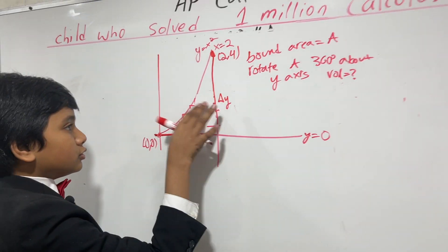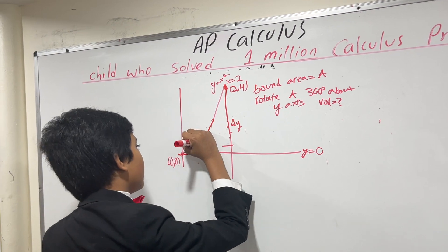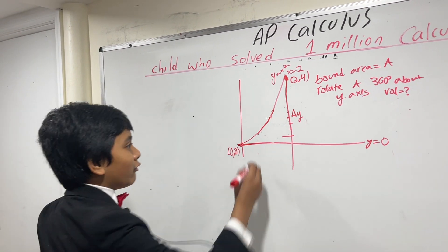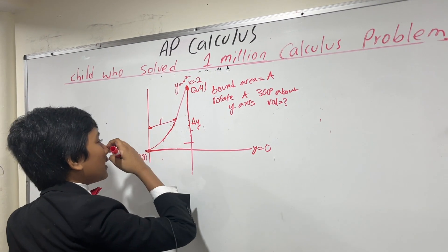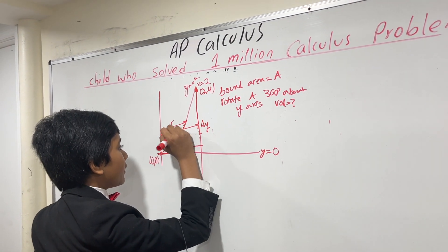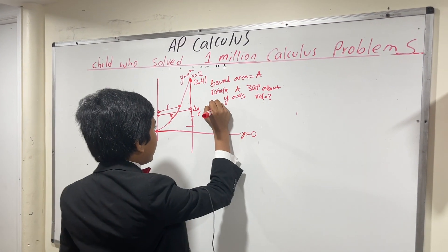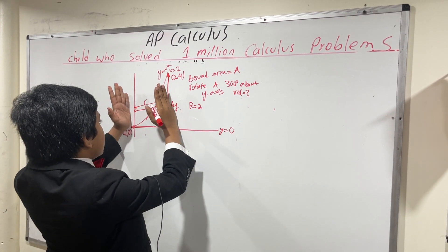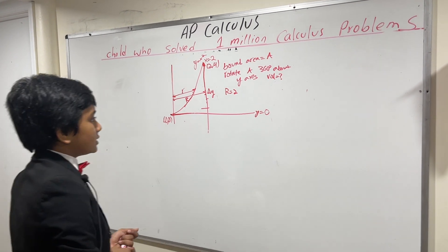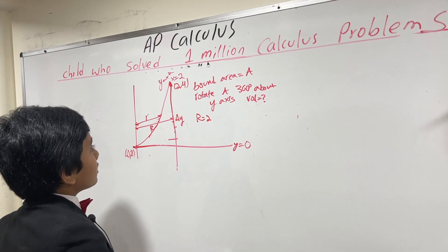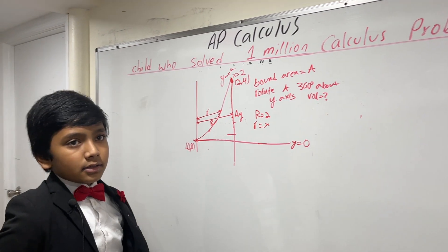Here is our little R, and this of course is our big R. So what is our big R? Well, our big R is always just 2, because this is the line x equals 2 — it starts from the Y-axis. So R is just 2, and little R is simply just X, because it follows this curve.